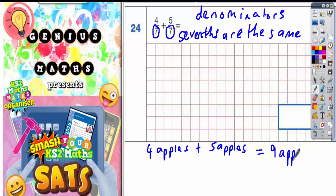If we said four sausages add five sausages, the unit would be sausages. So four sausages and five sausages would be nine sausages. But because we're dealing with sevenths, seventh is the unit.